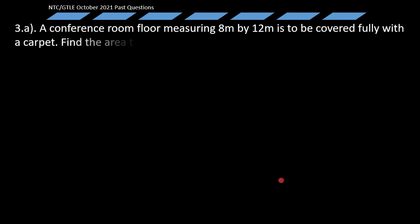Let's read. 3a: A conference room floor measuring 8 meters by 12 meters is to be covered fully with a carpet. Find the area to be carpeted. And 3b: A child solved a subtraction task as follows.